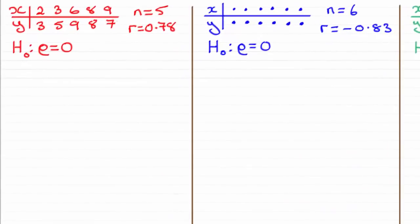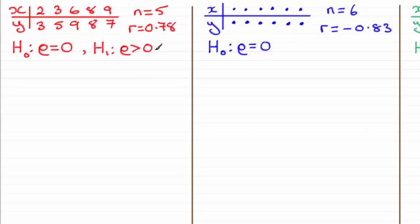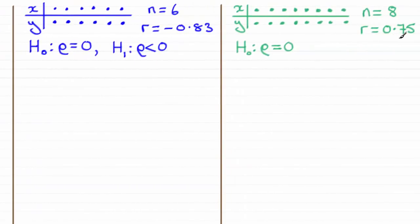Turning to the first example, we need an alternative hypothesis. Since the sample PMCC is 0.78, a positive value, the alternative hypothesis H1 is that rho is greater than zero. Similarly, in the second example where the sample PMCC R was a negative value of minus 0.83, the alternative hypothesis would test that rho is less than zero. In the last table, I want to demonstrate a different alternative hypothesis — that the population PMCC rho is not equal to zero, rather than being greater than zero.